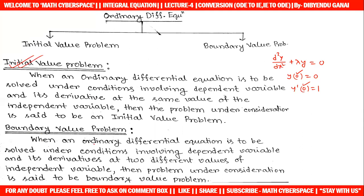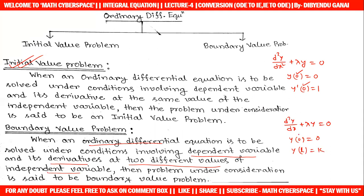What is a boundary value problem? When an ordinary differential equation is to be solved under conditions involving the dependent variable and its derivatives at two different values of the independent variable, the problem is said to be a boundary value problem. For example, d²y/dx² + λy = 0 with conditions y(0) = 0 and y(l) = k. Here the two boundaries are 0 and l, so this is a boundary value problem.